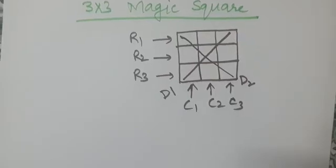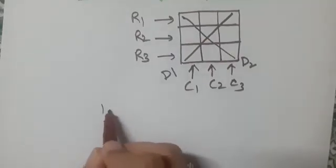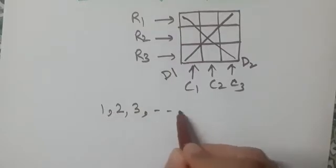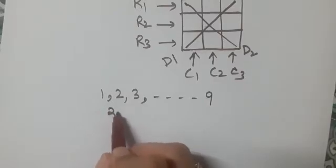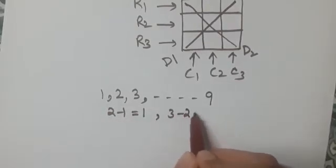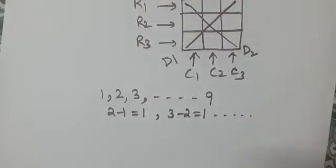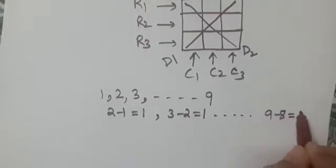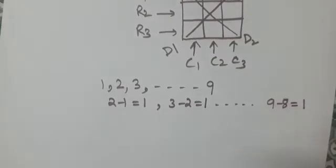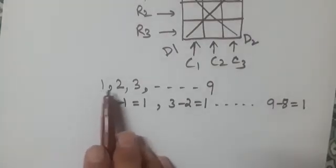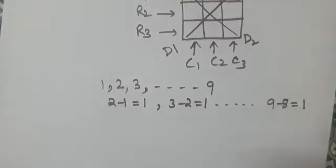What we need to do is: if we are given any nine consecutive numbers in which the difference between two consecutive terms is the same, then we can make a magic square. For example, let me take nine numbers from one to nine. These are consecutive numbers. We see that two minus one is one, three minus two is one, and if we keep on doing like this, nine minus eight is also one. So there is a common difference. We have to make a magic square using all the digits from one to nine — one digit can be placed once.